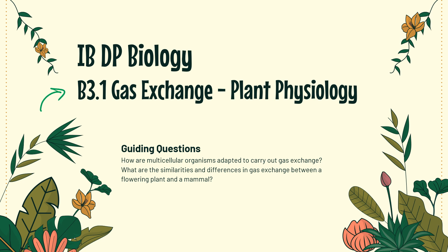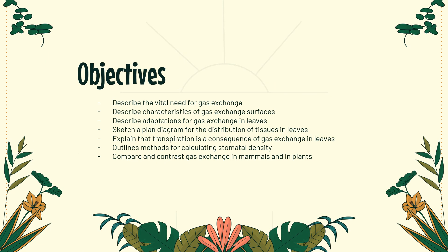Hello friends and welcome to a video lecture on topic B3.1 Gas Exchange in Plants. There's a separate video for gas exchange in animals. Our guiding questions: how are multicellular organisms adapted to carry out gas exchange? We're also going to look at similarities and differences in gas exchange between a flowering plant and a mammal. Our objectives include the vital need for gas exchange, characteristics of gas exchange surfaces, advantages that leaves have, sketching a plan diagram, transpiration as a consequence of gas exchange, calculating stomatal density, and comparing gas exchange in mammals and plants.